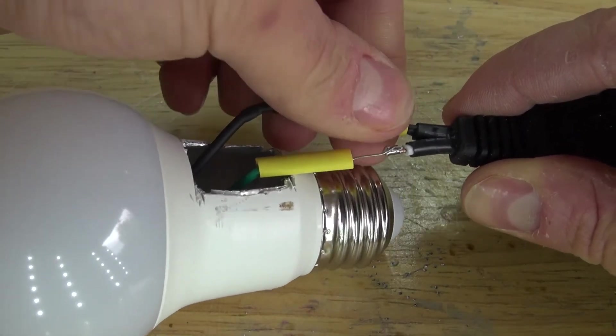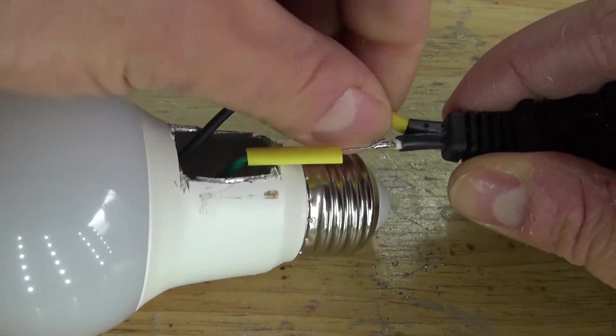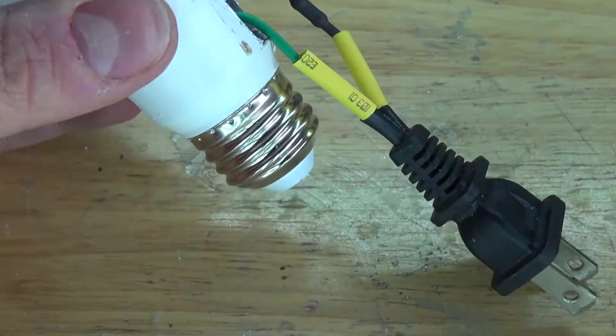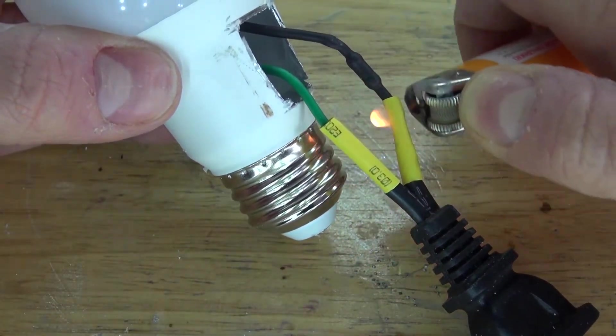Next take the shrink tubes and cover up the exposed solder points. Next apply heat and shrink the tubes.